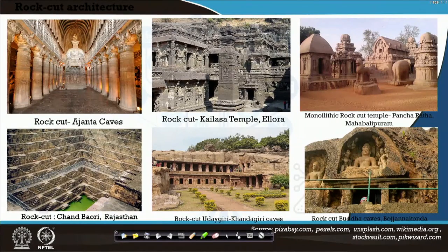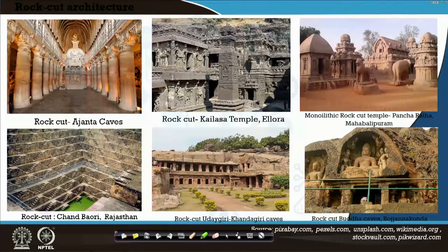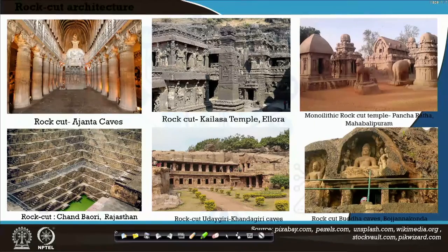These are some examples demonstrating the use of stone as a building material. The entire structure of rock-cut architecture — the Ajanta and Ellora caves — are entirely made of stone. The step well seen in Rajasthan is also cut out of stone. Rajasthan, particularly Kota, has lots of quarries. You can also see the monolithic rock-cut temple of Mahabalipuram — it has come out from one single rock.